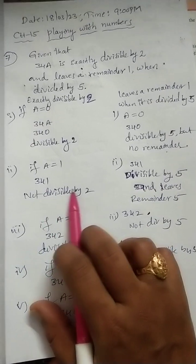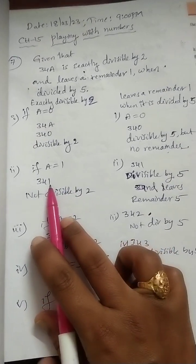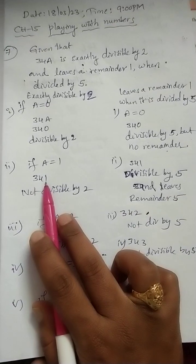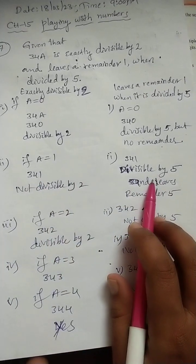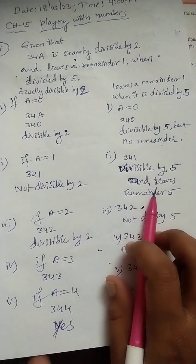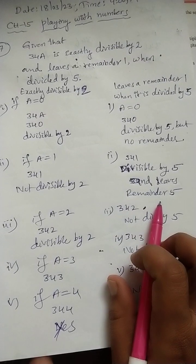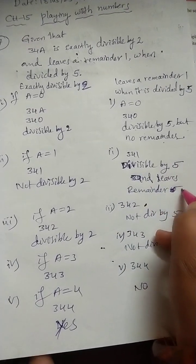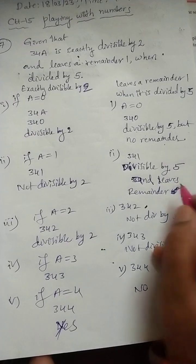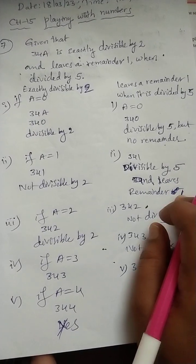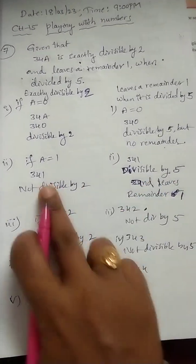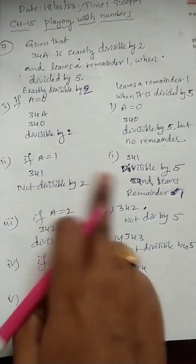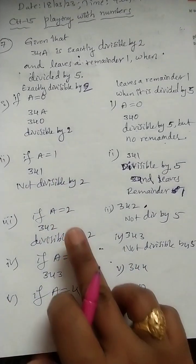If a is equal to 1, we get 341. It is not divisible by 2 because an odd number is in the ones place. When divided by 5 it leaves a remainder of 1, so that condition is satisfying. But the divisibility by 2 is not satisfied, so we should not consider this case.